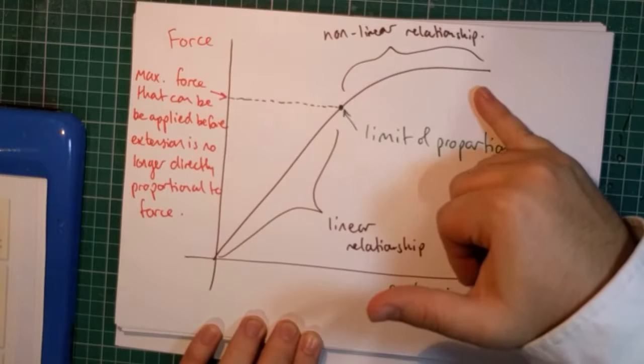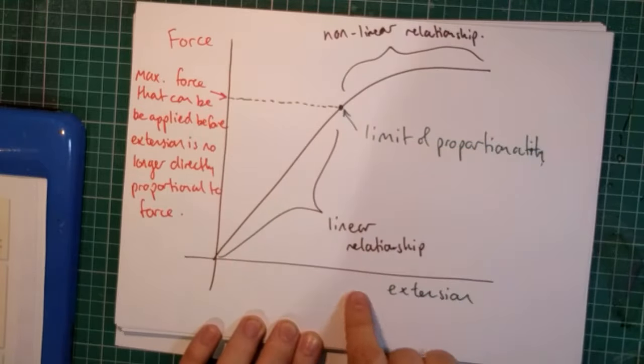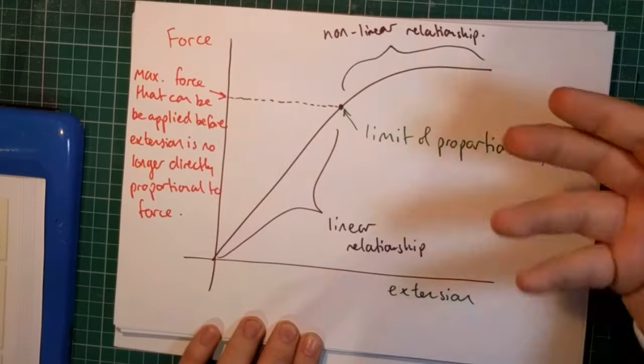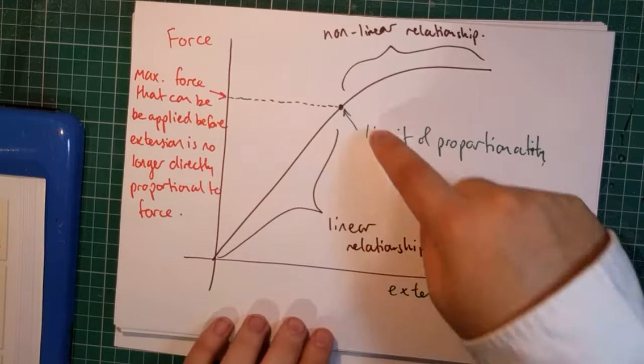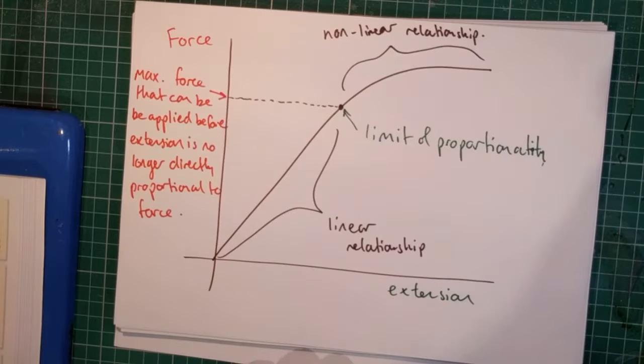After the limit of proportionality, then these two variables no longer have a linear relationship. They now have a non-linear relationship. For each additional applied force beyond the limit of proportionality results in a greater and greater extension of the object.